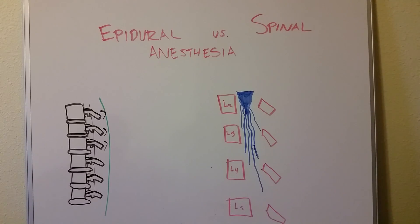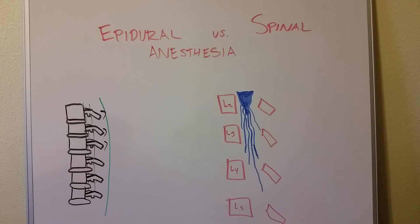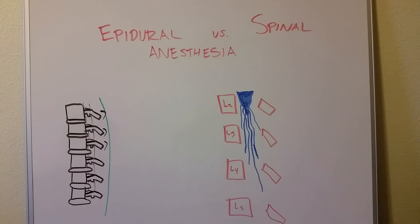Epidurals are placed into the epidural space, which is about two membranes away from the actual spinal cord. That drug has to diffuse through some tissue to get to the surrounding nerves or even the spinal cord, and that gives it a longer onset — it takes about half an hour for an epidural to be running at full strength, whereas the spinal, like I said, is less than five minutes.